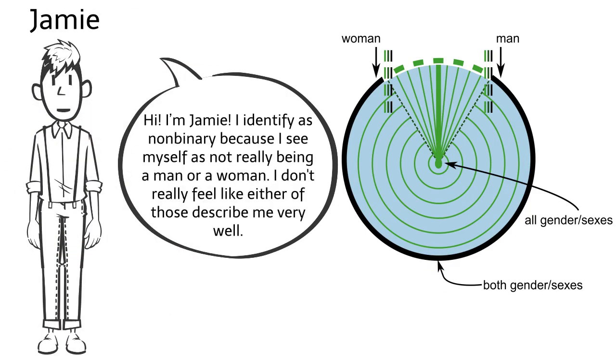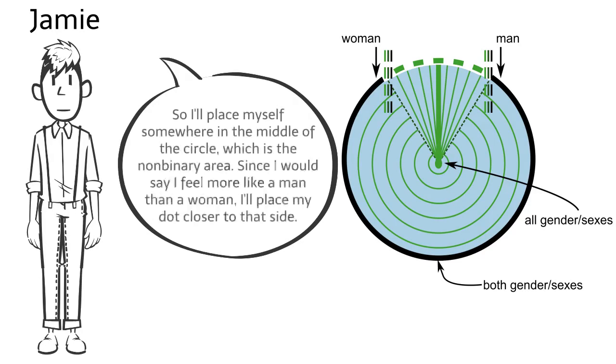Hi, I'm Jamie. I identify as non-binary because I see myself as not really being a man or a woman. I don't really feel like either of those describe me very well. So I'll place myself somewhere in the middle of the circle, which is the non-binary area. Since I would say I feel more like a man than a woman, I'll place my dot closer to that side.